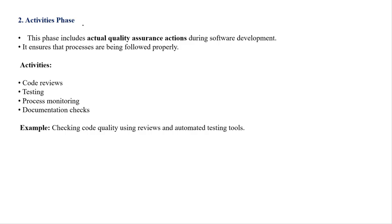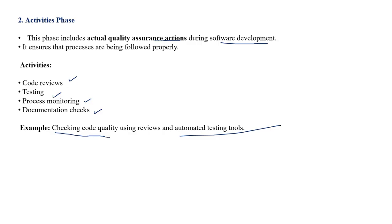The second phase is the Activities phase. This phase includes actual quality assurance actions during software development — whatever we follow to maintain or check software quality happens in the activity phase. We do code review, checking whether code is written properly, proper testing of what we have built, monitoring progress, and checking documents. Example: checking code quality using reviews and automated testing tools.